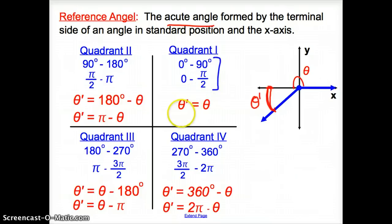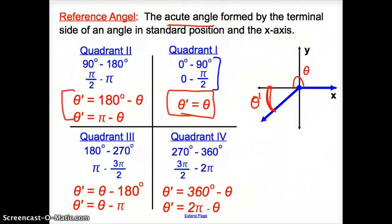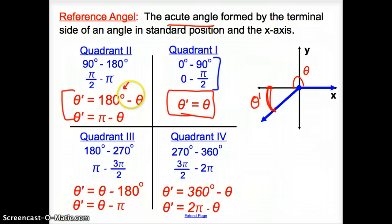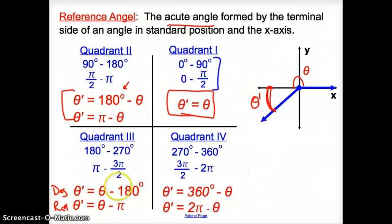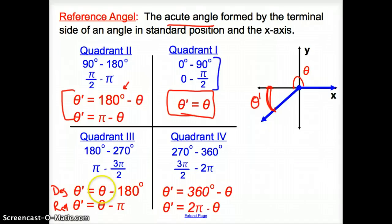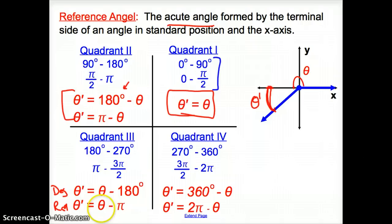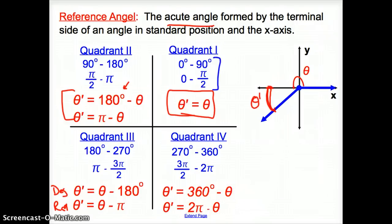If it's in the first quadrant, we keep it as is. If it's in the second quadrant, for degrees we use 180° minus theta, and for radians it's π minus theta. In the third quadrant, we subtract 180°, or subtract π in radians. In quadrant 4, it changes to 360° minus theta for degrees, or 2π minus theta for radians. So let's give a couple of these a shot.